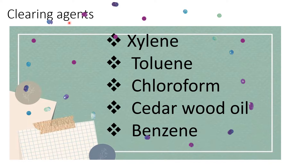Now let's understand clearing agents. Clearing agents clear the alcoholic composition out of the surface of the tissue whenever we are using alcohol as a dehydrating agent. The clearing agents are xylene, toluene, chloroform, cedarwood oil, and benzene.